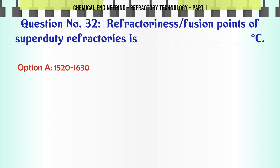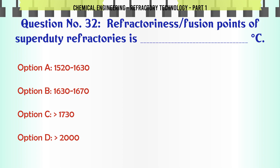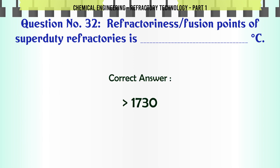Refractoriness (fusion point) of superduty refractories is ___ °C. A. 1520–1630, B. 1630–1670, C. 1730, D. 2000. The correct answer is 1730.